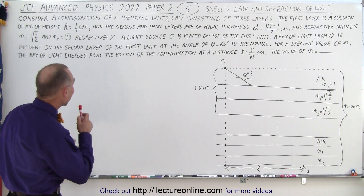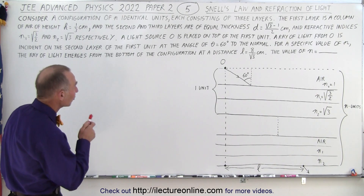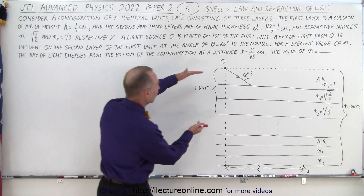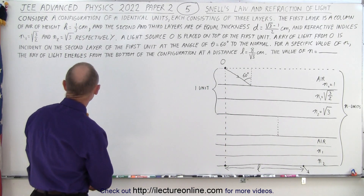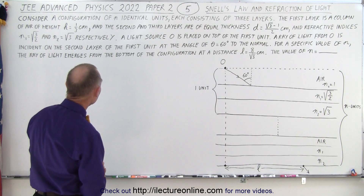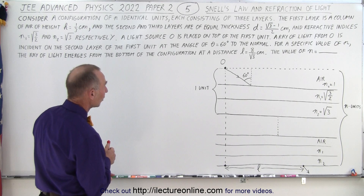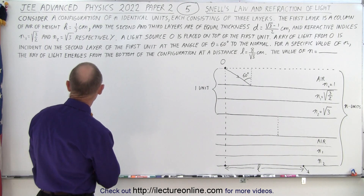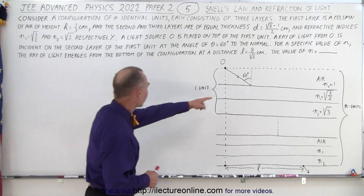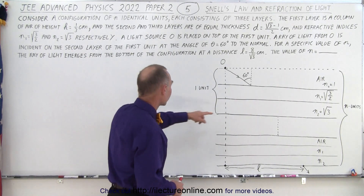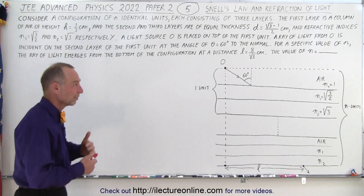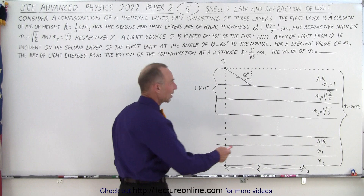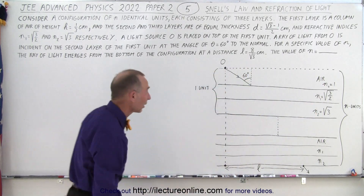The problem says: consider a configuration of n identical units, each consisting of three layers. The first layer is a column of air of height one-third centimeters. The second and third layers are of equal thickness of (√3 − 1)/2 centimeters, with refractive indices √3/2 for the second layer and √3 for the third layer. We've renumbered them as n0, n1, and n2 to help keep track.